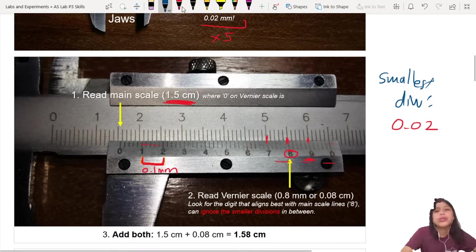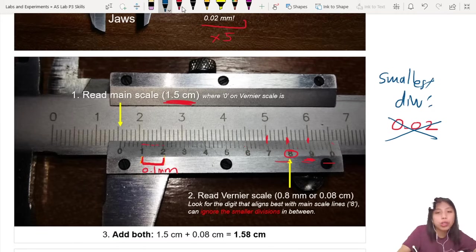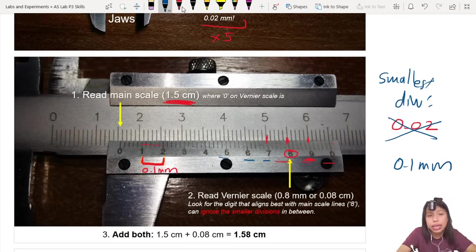So I will recommend you use this one as your uncertainty. Not the 0.02 because we didn't read all the small, small one. We only look at the numbers down in the vernier scale. So 0.1 millimeter is your smallest division in your vernier calipers. But,